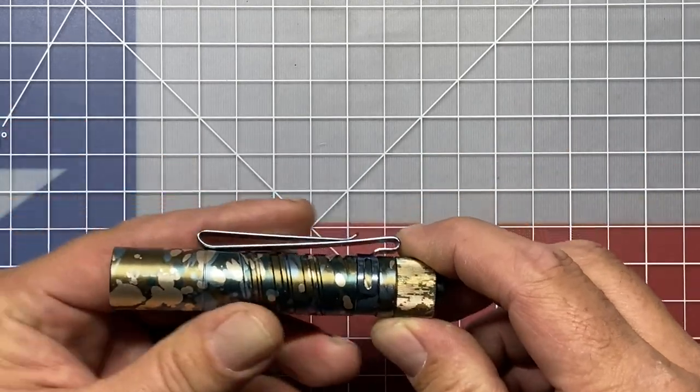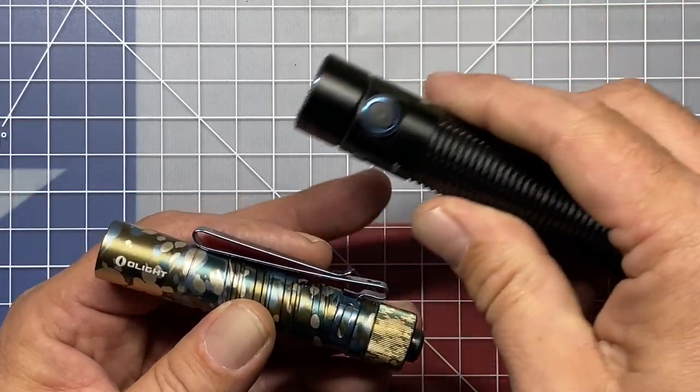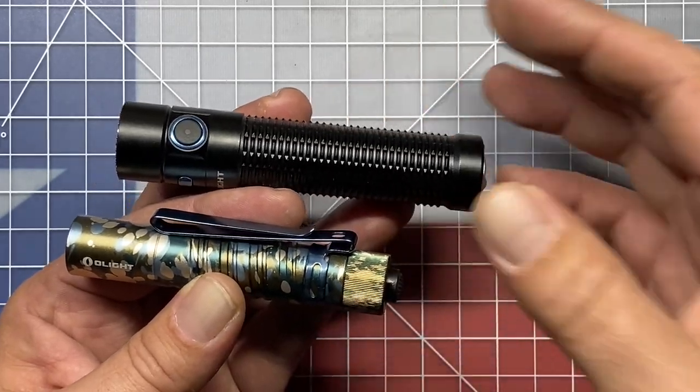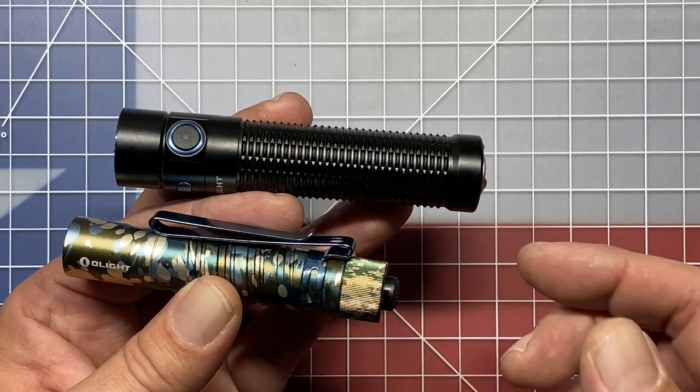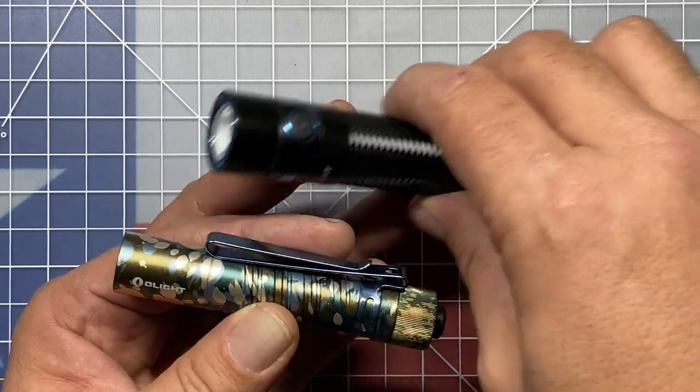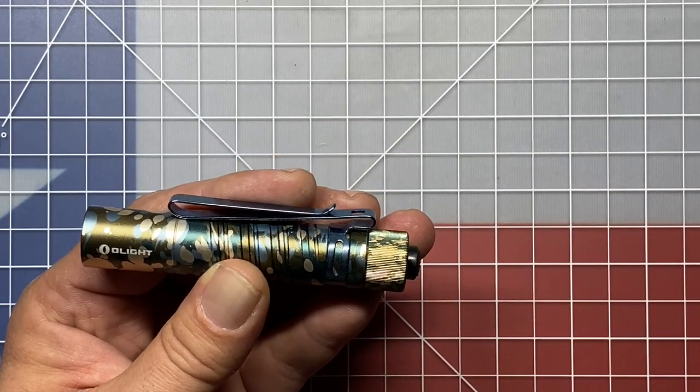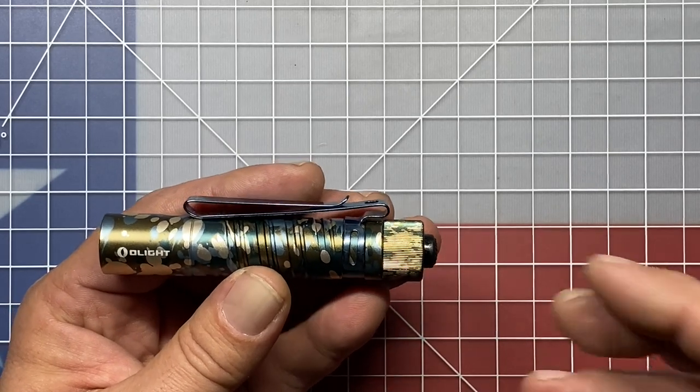But this is an overall very nice little EDC light. Now another thing that I like about this, and we'll bring that Warrior Mini in here real quick again. A lot of your lights today are going to have either a side switch and a tactical switch in the rear. This one is not considered tactical, obviously. So this is just going to be your standard EDC light.